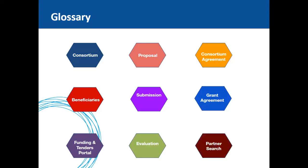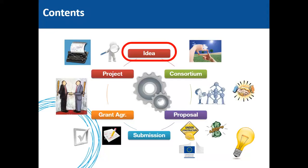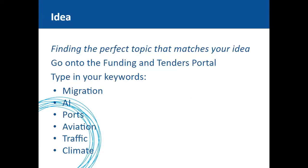The partner search is the process of finding ideal partners and forming a consortium. For applying to Horizon 2020, one can use several partner search tools which will be explained during this webinar. The overall journey goes from idea to consortium, to proposal submission, to grant agreement, and finally the project — starting with finding the perfect topic that matches your idea.